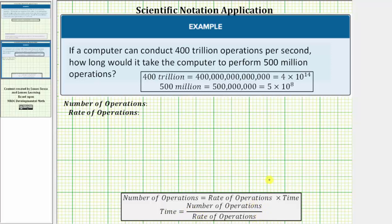Going back to the given information, the rate is 400 trillion operations per second. 400 trillion is equal to 4 times 10 to the 14th. So let's write the rate of operations as 4 times 10 to the 14th operations per second.